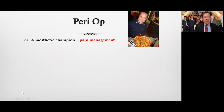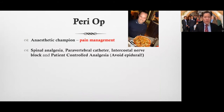Perioperatively, you need an anesthetic champion — he or she is the champion for pain management. We give the patient spinal analgesia, put in a paravertebral catheter with a high infusion rate of about 15 mls per hour, give an intercostal nerve block, and provide patient-controlled analgesia. We avoid using the epidural, and we have done that from the outset.